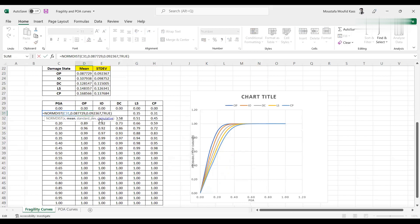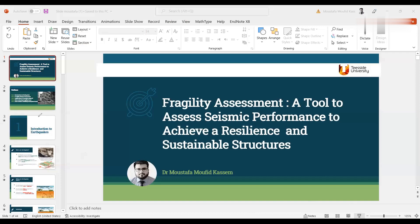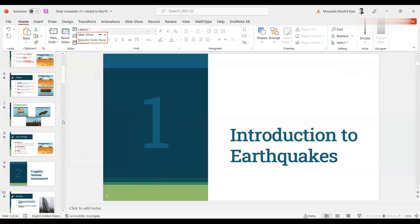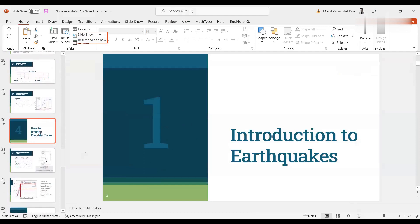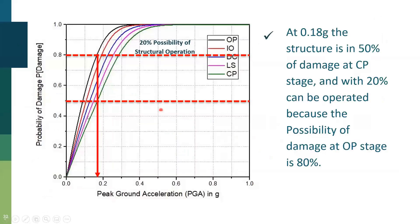So we have here the fragility curves, which show that at 0.18g, the structure is collapsed. 50% of the damage is collapsed. And with 20% can be operated because the possibility of damage at OP stage is 80%. So here's 80%, so 20% can be operated. So here's 80% damage. Here's 50% damage. The total collapse needs around 0.5g, so the structure collapses. So how we can improve this? We can improve this by applying a flexible foundation base isolation system. We can apply tuned mass damper. We can apply the damping devices. We can apply the reinforcing or bracing system or diaphragm system or shear wall system to improve the structural behavior.